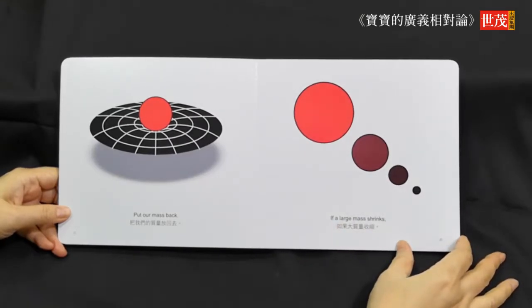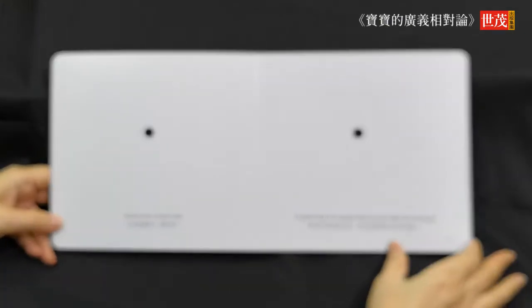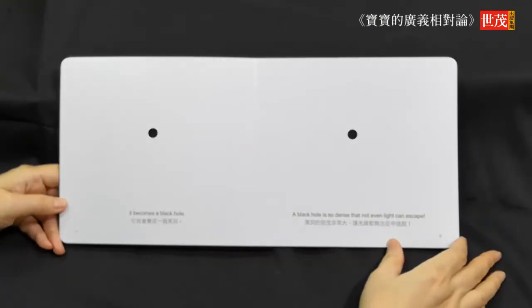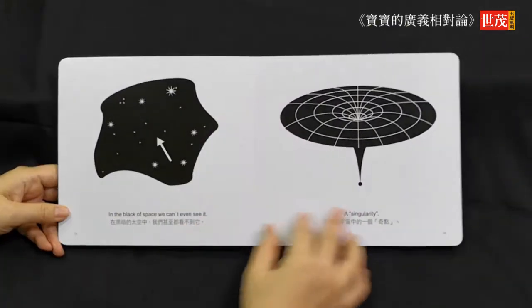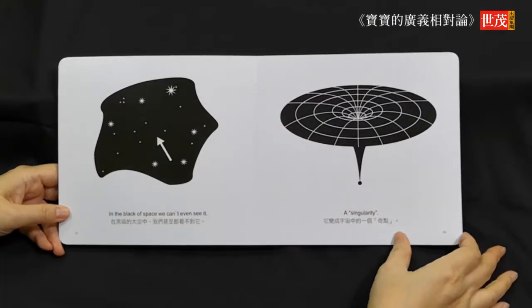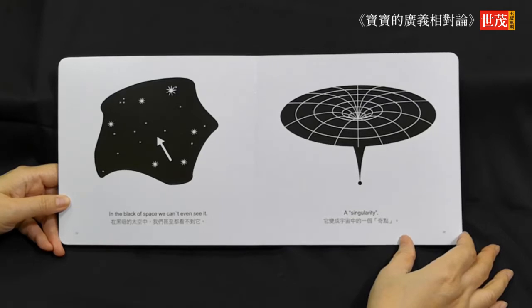If a large mass shrinks, it becomes a black hole. A black hole is so dense that not even light can escape. In the black of space, we can't even see it. A singularity.